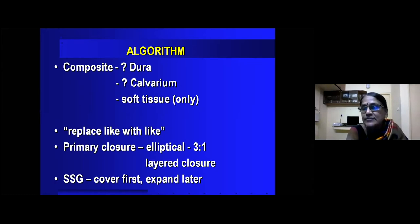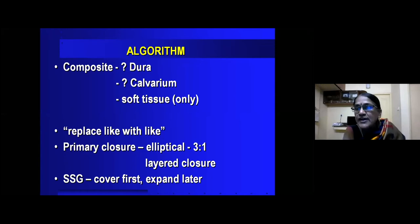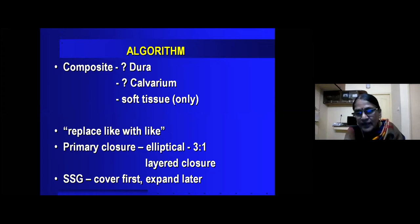For postgraduates: for primary closure, make the defect elliptical, maintain a 3:1 ratio, and use layered closure including the galea — this prevents tension and reduces scar alopecia and depressed scarring. Undermine widely to prevent tension. For SSG, which is the workhorse in a burn center, always cover first to close the raw area, and you can expand later when needed. For local flaps, learn your biogeometry thoroughly, as dermatological colleagues will refer these patients to you. Remember: do not distort the frontal hairline or sideburns, and keep in mind the variation of hair follicles.